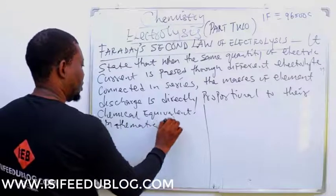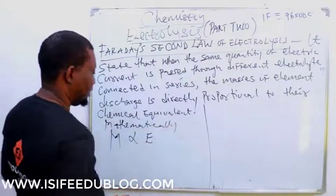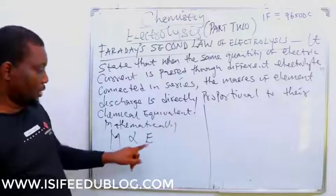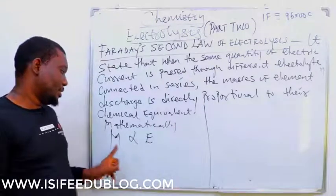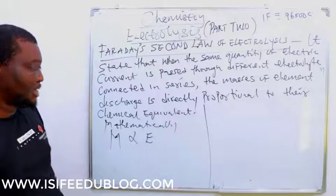So let's look at what it states in terms of mathematical expression. Mathematically now, M is directly proportional to E. What is E? E is chemical equivalents. M is the mass of the elements.